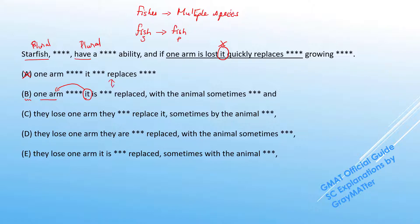The only difference here is that the it replaces the arm is written in active form and the arm is replaced is written in passive form. That's all.